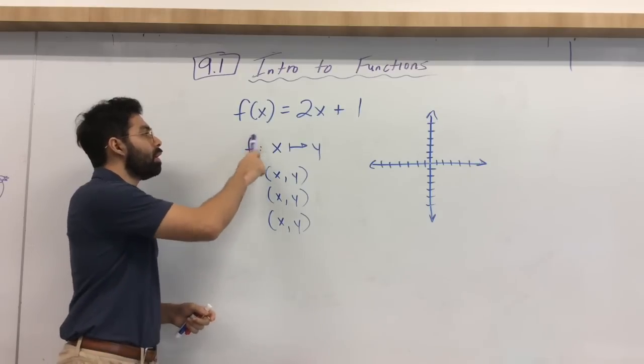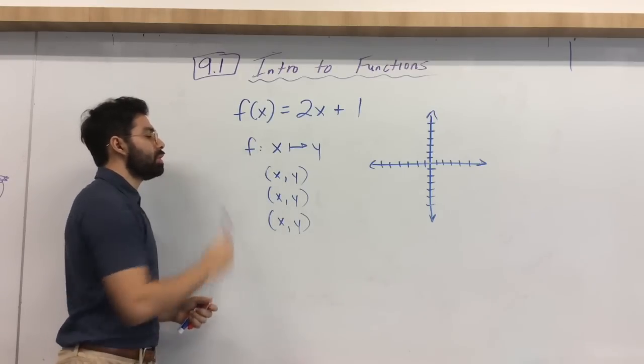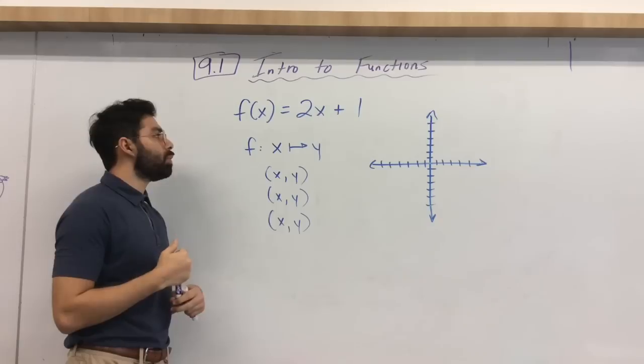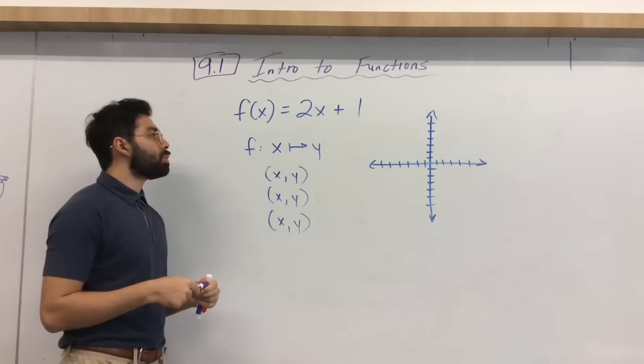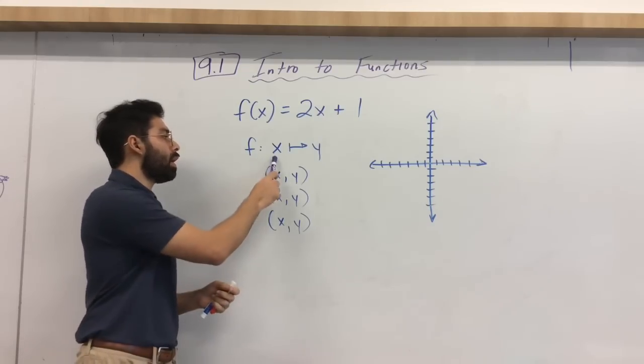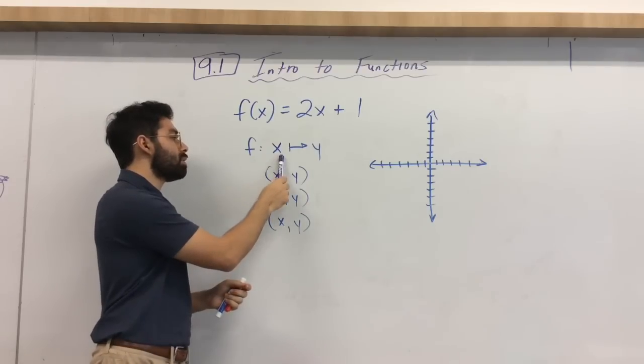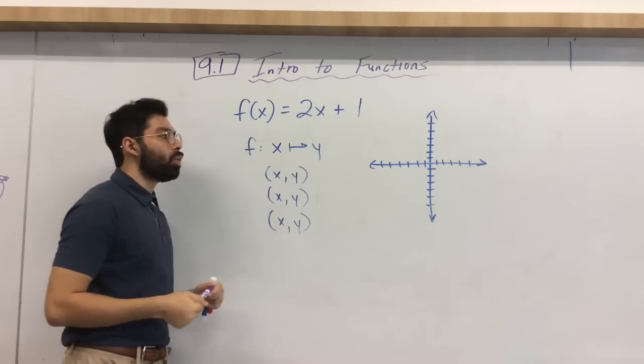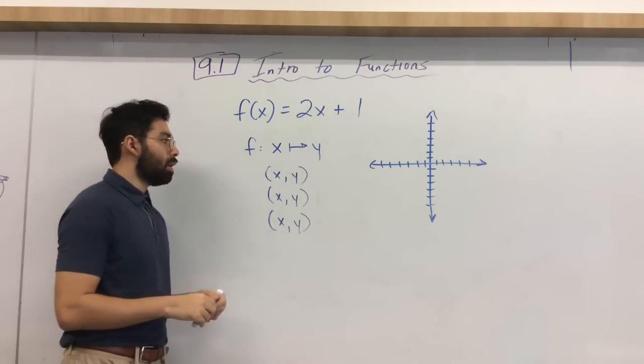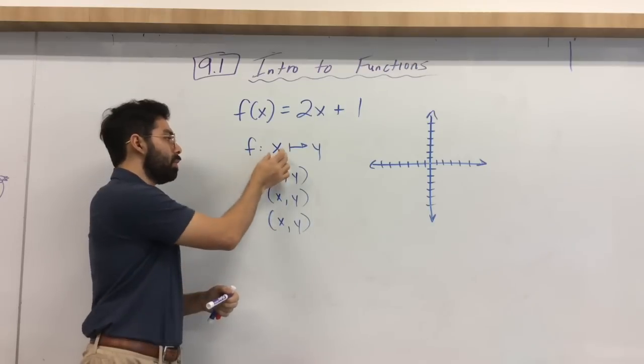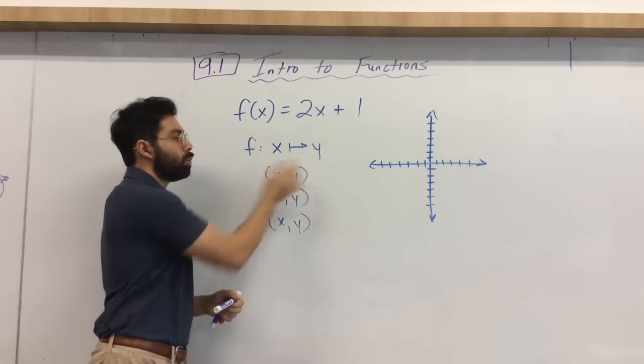We are given f of x. And again, whenever you see f of x, you can equate that to y. We have f of x is equal to 2x plus 1. Or again, x is being mapped to y. So a number on the x-axis has an output of something on the y-axis. Okay? And again, if you do this, if you put an input, you will get outputs.